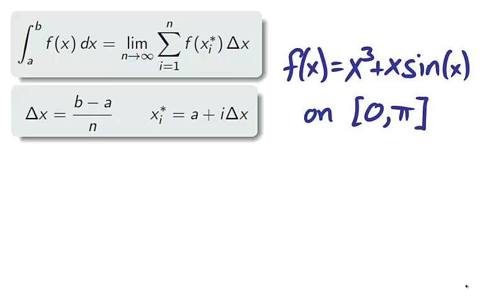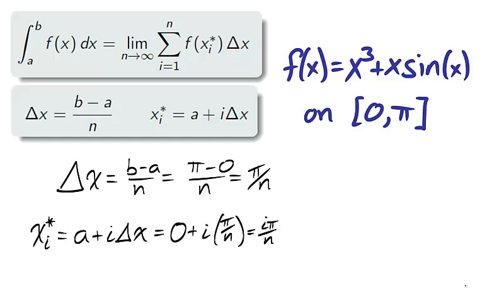For example, the definite integral of the function x cubed plus x sine x on the interval zero to pi is found by subdividing the interval zero to pi into n subintervals of length delta x. And using the left endpoint for a sample point, xi star is equal to a plus i delta x, or i pi over n.